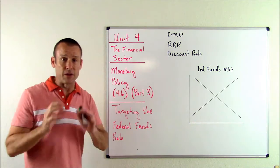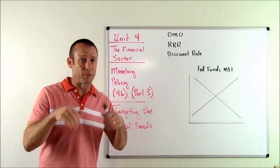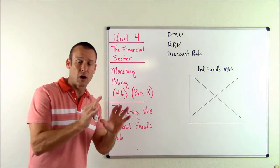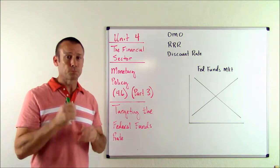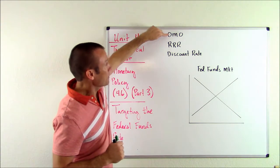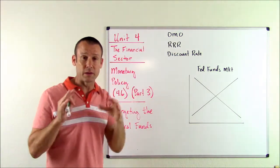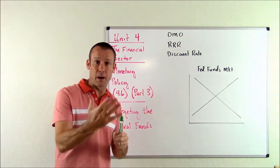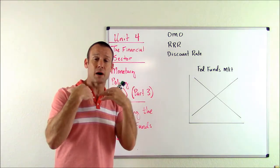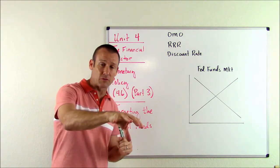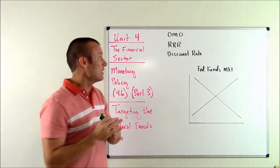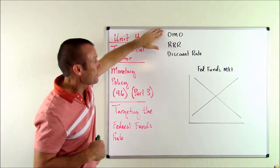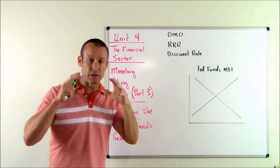The Fed can absolutely influence the federal funds rate. If they want it to go up, they can pretty well get it to go up, and if they want it to go down, they can get it to go down. So it is an important interest rate they are targeting, but technically not a tool. The tools of the Fed are open market operations — buying or selling U.S. Treasury bonds to or from banks — the required reserve ratio, and the discount rate. The Fed controls these directly.